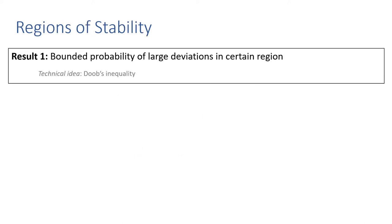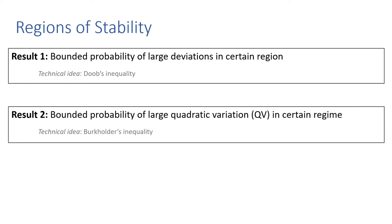In this model, we prove a series of formal results using measure-theoretic tools. First, we show that the stablecoin has bounded — or small — probability of large deviations in its price in a certain region, which we call the stable region. We also show that the stablecoin has bounded probability of large quadratic variation in this region.